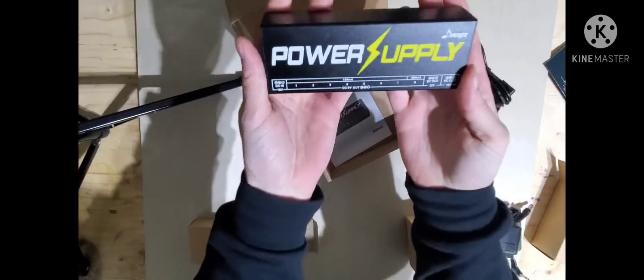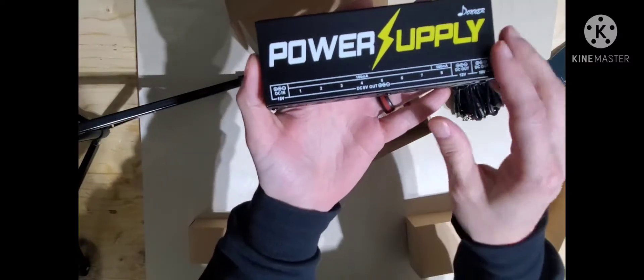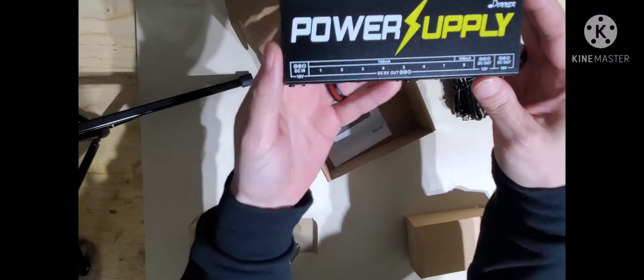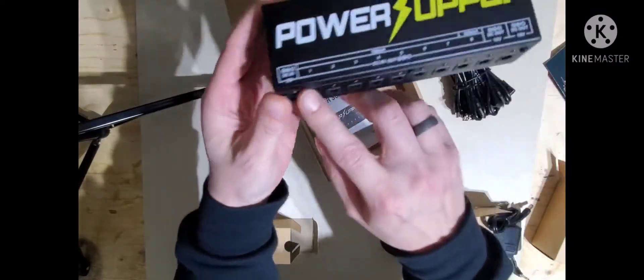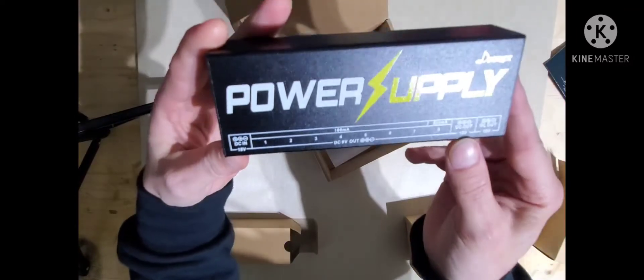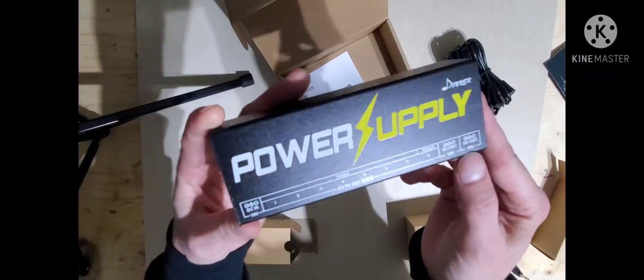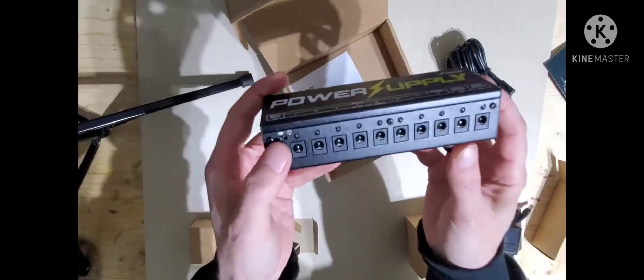Okay, there you go. Donner power supply. You've got eight 100 milliamp 9-volt, or I guess there's seven and one that serves 500, and then one for 12 volt and 18 volts. And I guess that's the switch for the LEDs.